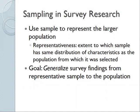What we're worried about here is representativeness — the extent to which the sample has the same distribution of characteristics as the population from which it was selected. If the college is 70% female but our sample of 50 students is only 30% female, it's not very representative. If it's not representative, we can't generalize. The goal with sampling is to generalize our survey findings from the sample to the population.